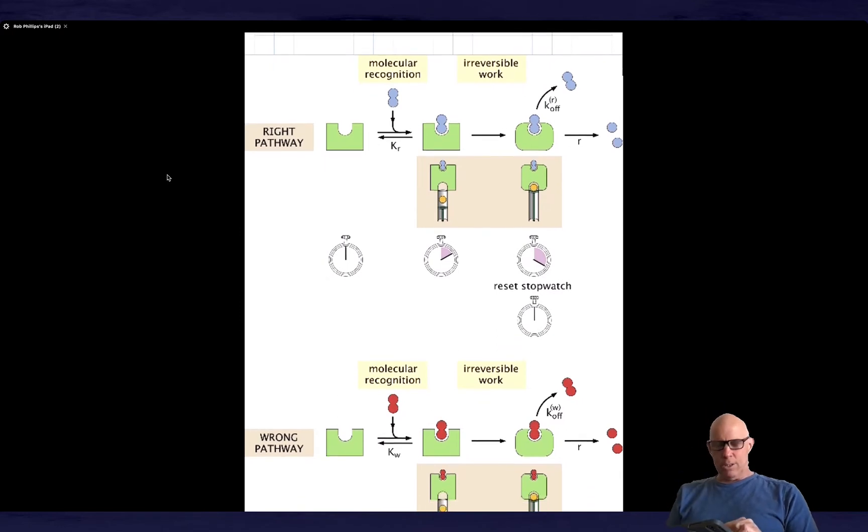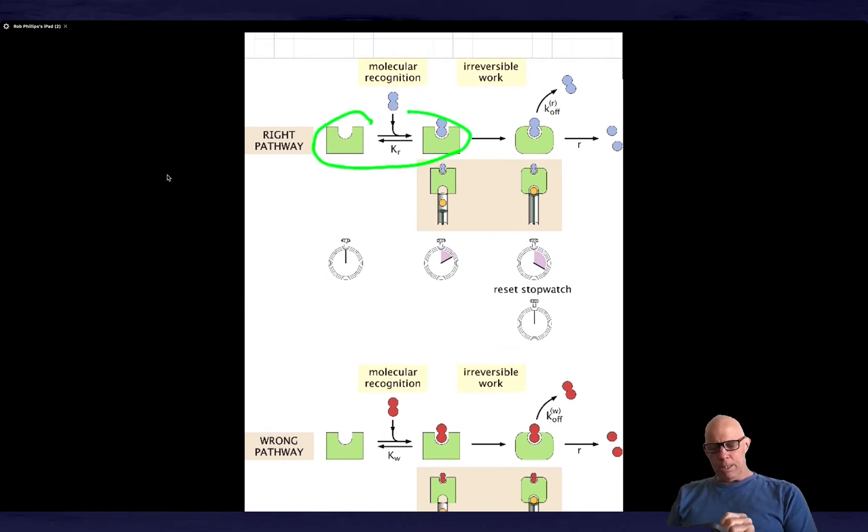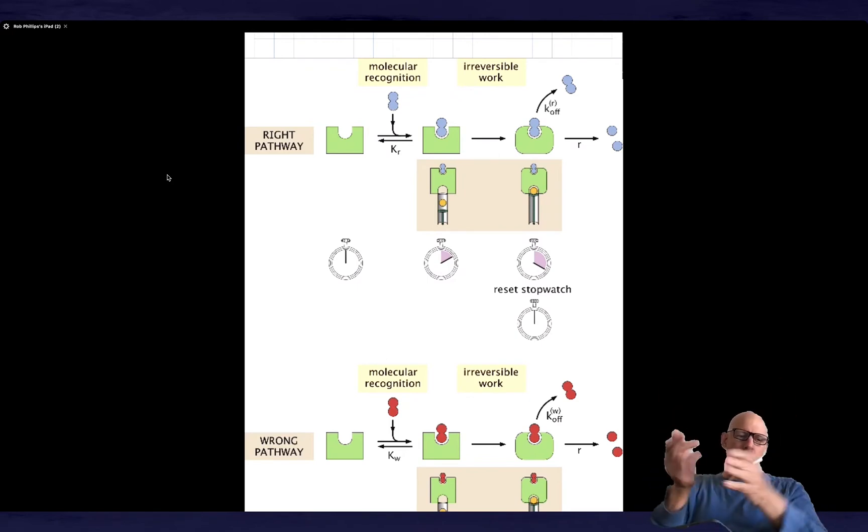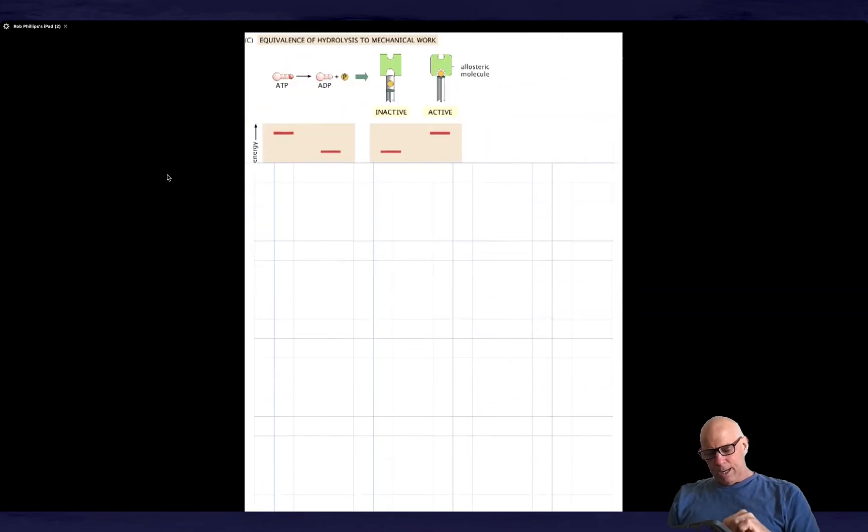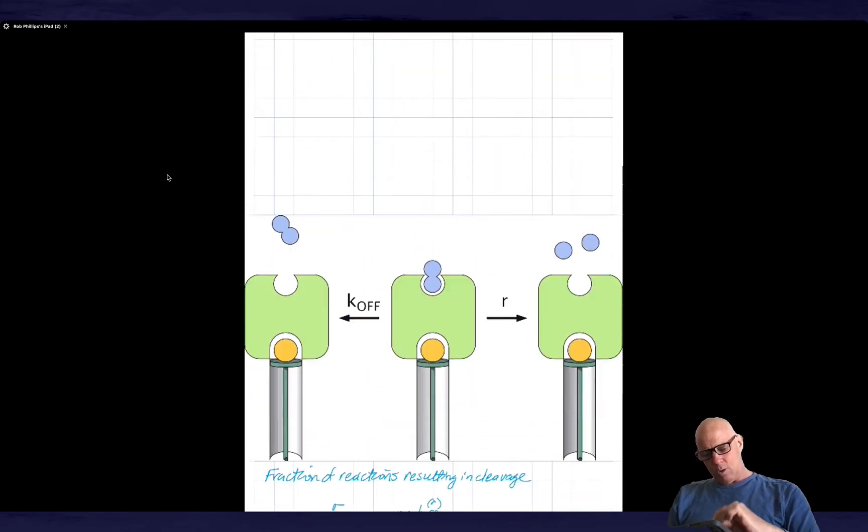So the idea, just to recap, is that there's the initial molecular recognition event, which is dictated by the KDs. So the right and the wrong are both dictated by their respective KDs. But then we do some work. The enzyme goes into a new conformational state. This is the new conformational state. It is now competent to do the enzyme action. And I reset the stopwatch, and now I have two competing processes. At that moment, when I reset the stopwatch, I change the conformation, the enzyme becomes active and therefore competent. At that point, there's a bifurcation diagram.